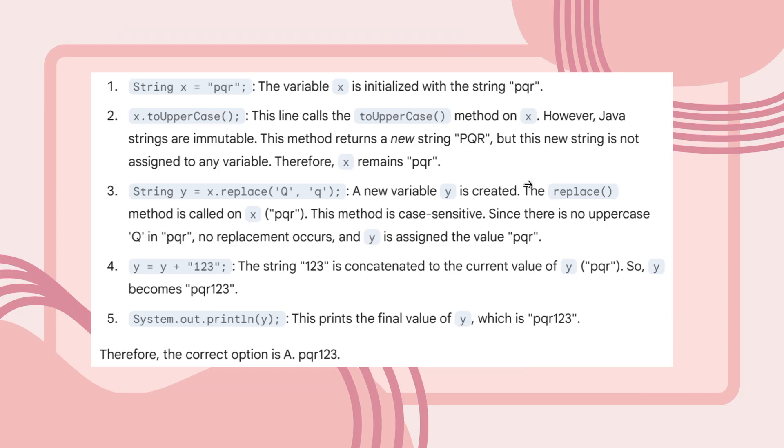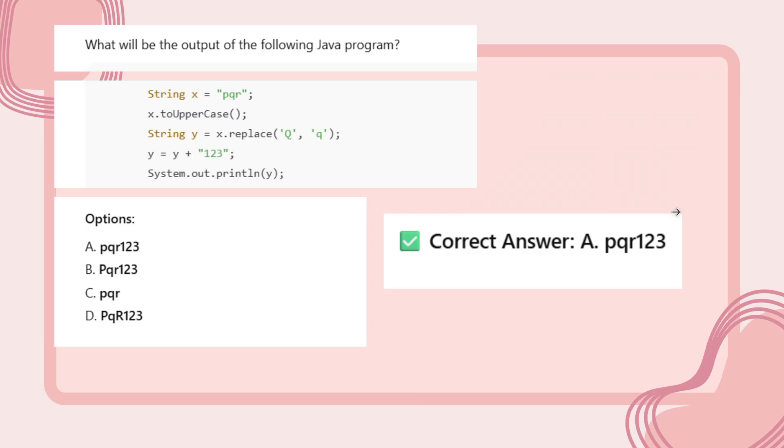I hope you got the explanation. Strings are immutable. Whether you're calling toLowerCase or toUpperCase, it's not assigned to the variable x, so variable x remains PQR. Here, replace capital Q with small q—there is no capital Q, so how can it replace with small q? X remains small PQR only. It's assigned to y variable as PQR. Now 123 is a string and it's concatenated to y, making PQR123. At last, it's asking you to print, so the output is PQR123. I hope you got this question. If you want, have a screenshot.